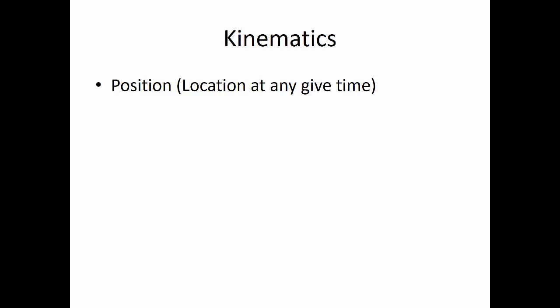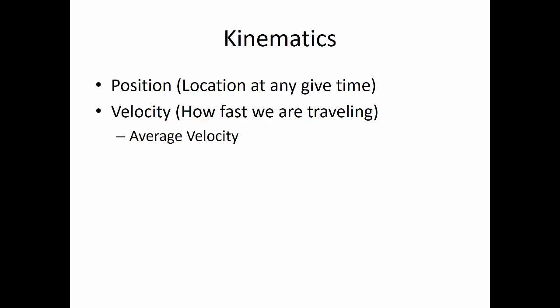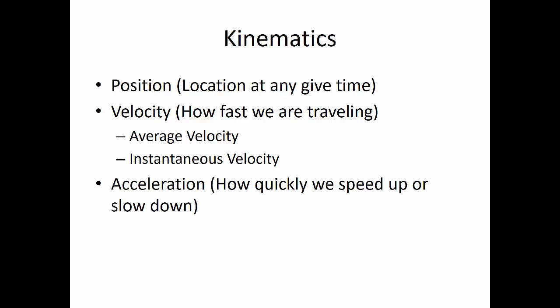There are some important variables that we deal with in kinematics. First is position — this is just our location at any given time. We also work with velocity, which is how fast we are traveling. In dealing with velocity, we can look at an average velocity or an instantaneous velocity. We also work with acceleration, which is how quickly we speed up or slow down. All of these variables are related to time. Let's look at an intuitive application of distance and velocity.